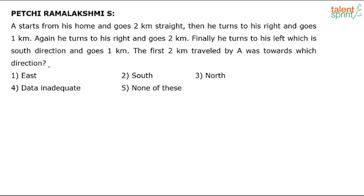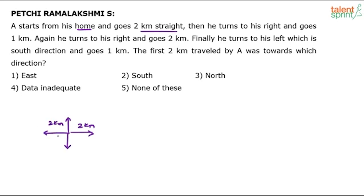This looks like a simple direction question, but when you start tracing the path you will realize that the start itself is not clear. Read the question again — it says A starts from his home and goes 2 kilometers straight. A has started from his home, so let's say this is his starting point. Now there are 4 possibilities: A can go 2 kilometers east, north, west, or south. We have no clue which direction he is referring to.